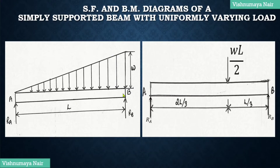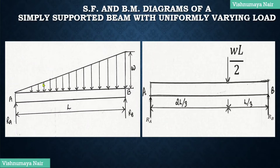Here I have shown a simply supported beam carrying a uniformly varying load from 0 at one end to w at the other end. You can clarify your doubts on the important types of beams and the types of loadings by watching the previous videos on these topics — I will provide the links in the description. In the previous videos I have explained that we have to convert this uniformly varying load into an equivalent point load for solving the numerical problems.